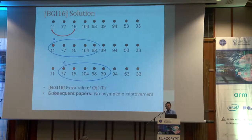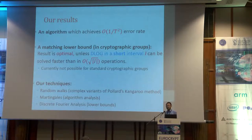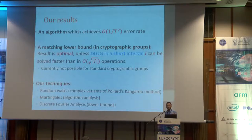The question of whether one can do better was open, and several papers tried to improve it but there were no asymptotic improvements. Here is our result: we show a randomized algorithm which achieves an error rate of 1/T² instead of 1/T. We also show a matching lower bound, which shows that unless one can find discrete log in a short interval faster than a square root of the interval length, we cannot beat the 1/T² bound. Currently, for all standard cryptographic groups, this is optimal — at least we believe so.